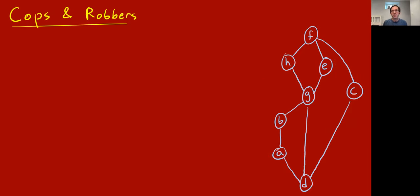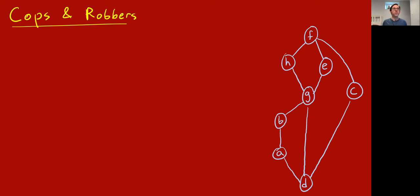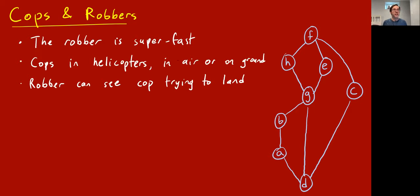Let me give yet another equivalent definition of tree width: the cops and robbers game. There are different cops-and-robbers games characterizing different graph properties. The rules are: the robber is super fast, the cops are in helicopters, and the robber can see where a cop is trying to land. The graph is like a game board — the robber starts at some vertex, and you have some number of cops.